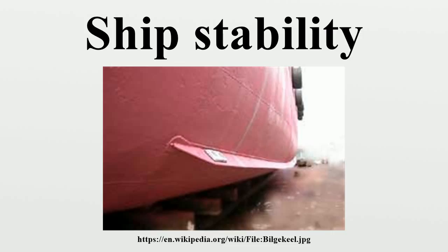Transverse and longitudinal waterproof bulkheads were introduced in ironclad designs between 1860 and the 1880s, with anti-collision bulkheads having been made compulsory in British steam merchant ships prior to 1860. Before this, a hull breach in any part of a vessel could flood the entire length of the ship. Transverse bulkheads, while expensive, increase the likelihood of ship survival in the event of damage to the hull by limiting flooding to breached compartments. Longitudinal bulkheads have a similar purpose.